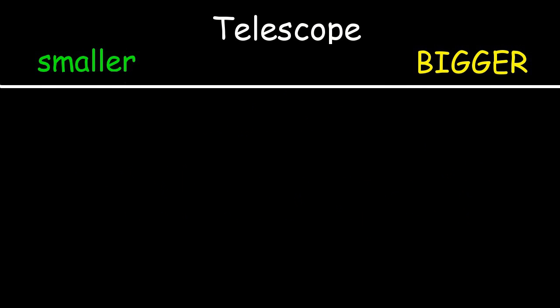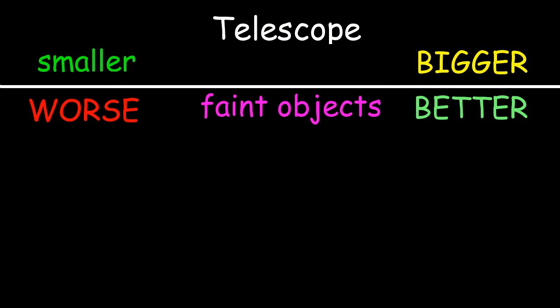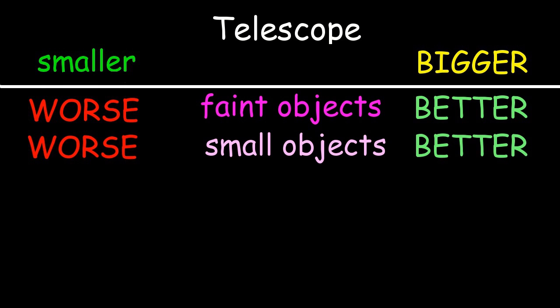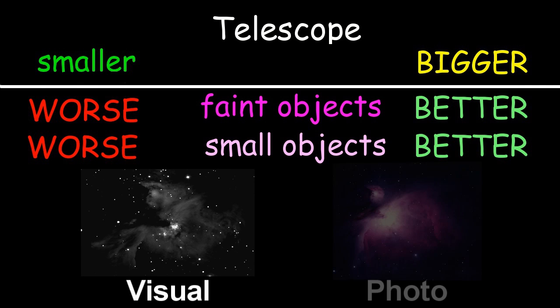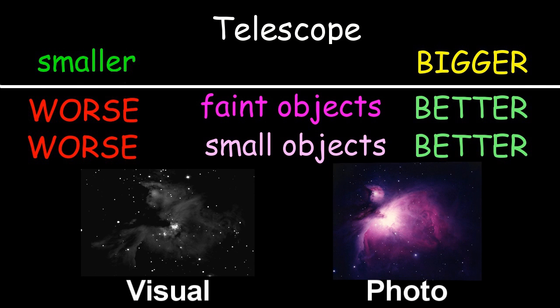Telescopes do two things: they allow you to see faint objects and they allow you to see small objects. Faint objects tend to be outside our solar system and they tend to be big and fuzzy — the so-called deep sky objects: galaxies, globular clusters, nebulae, supernova remnants and so on.